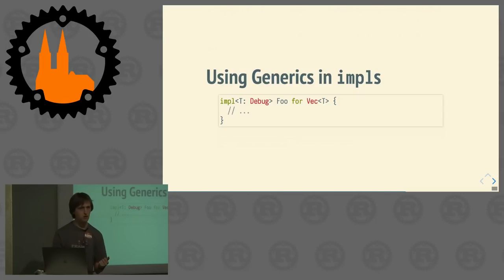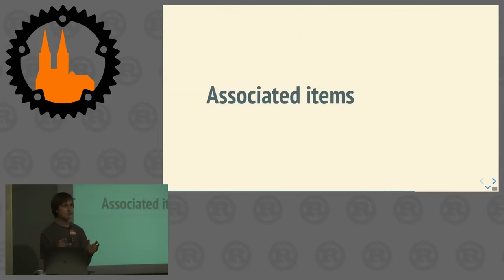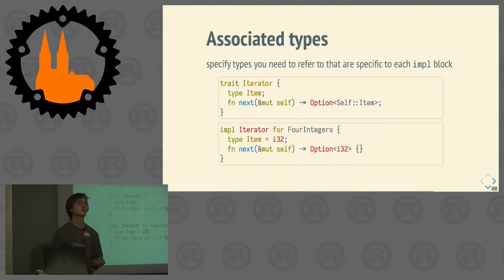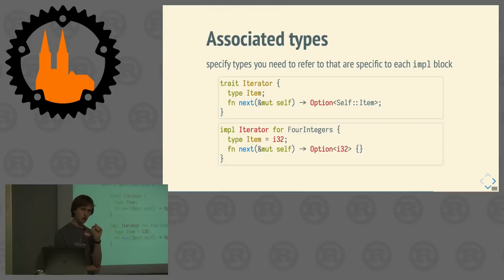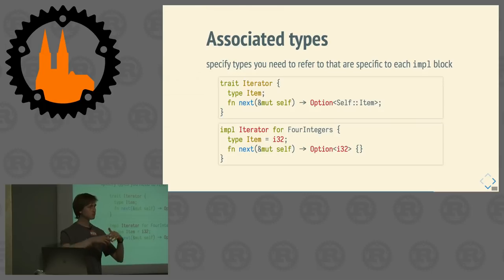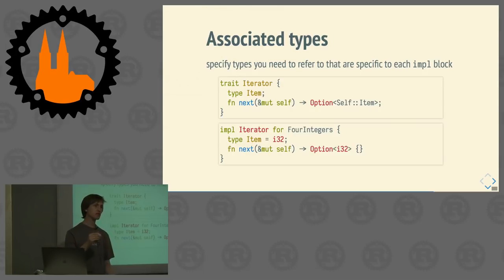This is basically all you need to know if you want to write methods in traits and implement them for your types. But you can also add other things to your traits. A trait is a collection of associated items. The most basic one, associated functions, is what we've seen — it's methods. But there are also associated types. Consider the iterator trait: all you need to implement is a `next` function. An iterator wraps your data, and if you call `next` on it, you get a new value.